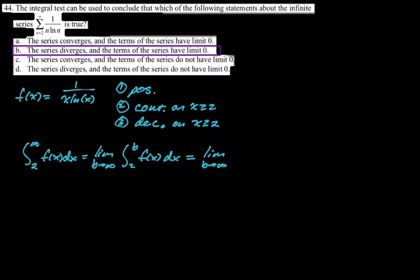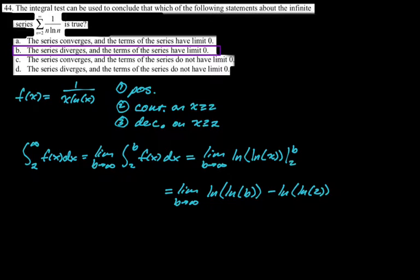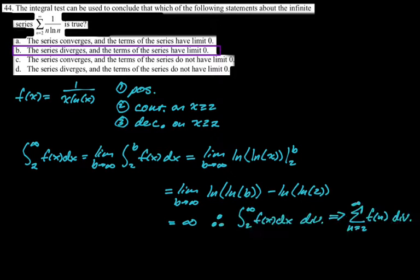The integral test: we want the limit as B approaches infinity of the integral from 2 to B of f(x) dx — that's an essential step on a free response question, get the notation right. The integral diverges and that means the series diverges, so our answer is B, which I chose about three minutes ago. On a multiple choice I wouldn't have done all this work — I would have just picked B and moved on a long time ago.